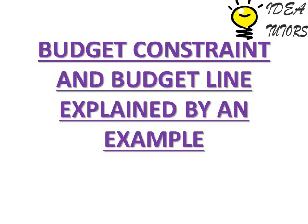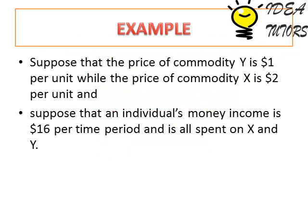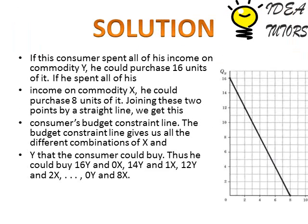In this video we are discussing an example to explain budget line and budget constraint. Suppose there are two commodities Y and X. The price of commodity Y is $1 per unit and the price of commodity X is $2 per unit. The consumer's income is $16 for the time period, and this whole income is to be spent only on these two goods X and Y.